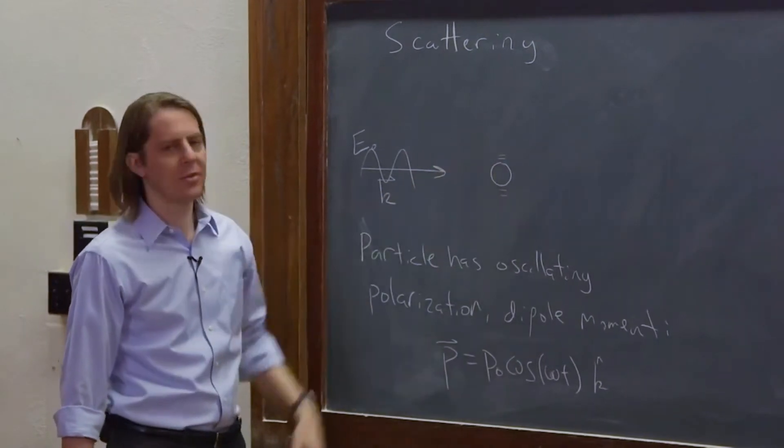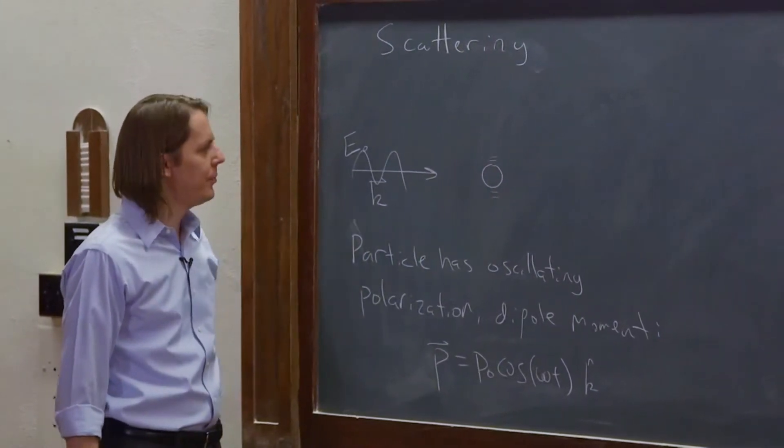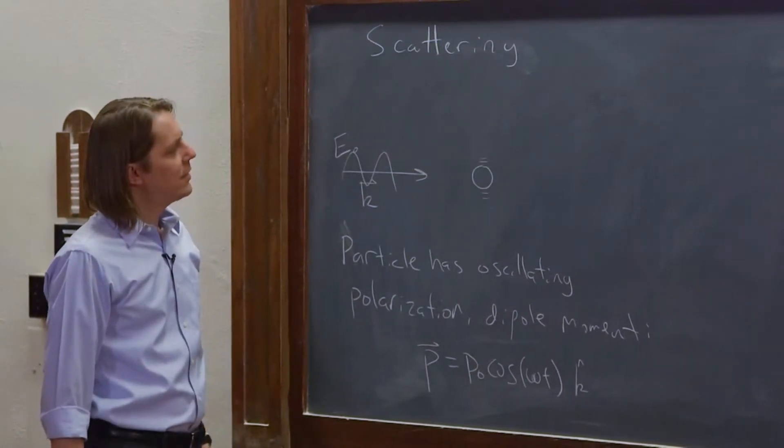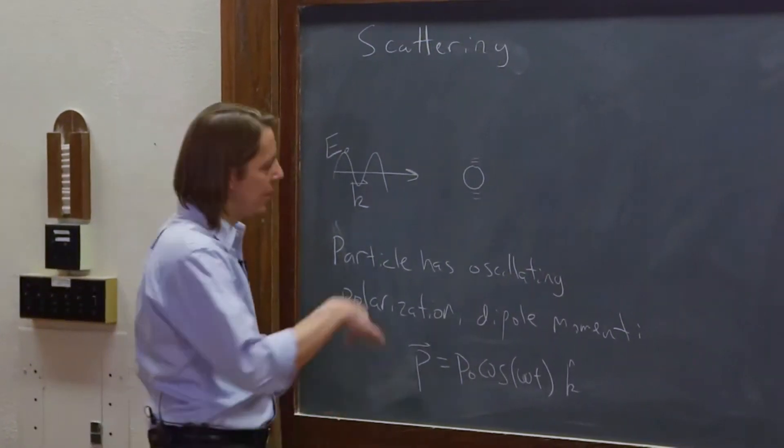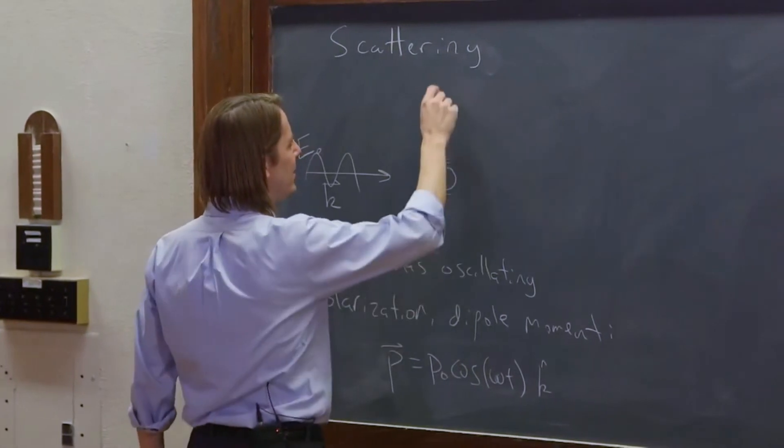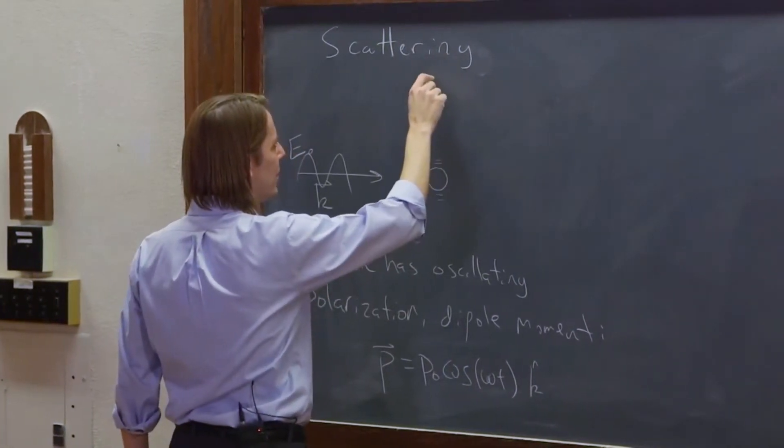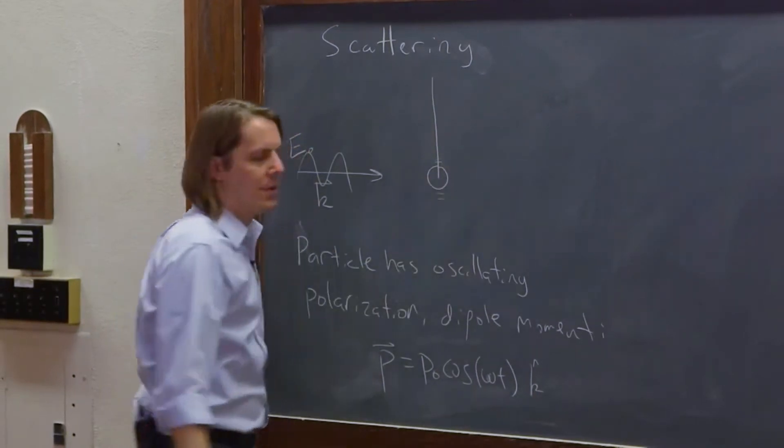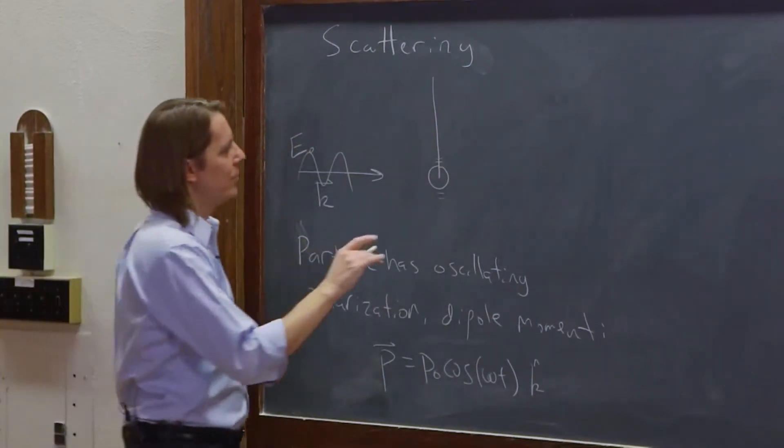So electrons are moving up and down. A dipole moment is oscillating up, down, up, down. So to calculate the amount of scattering, we need to give it a well-defined coordinate system, and we're actually going to go to spherical coordinates. It's important to do this in spherical coordinates.